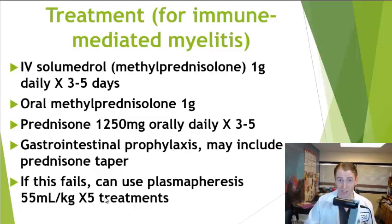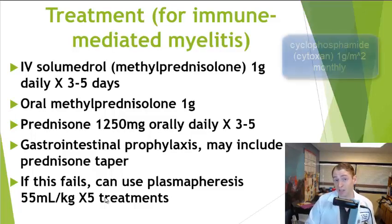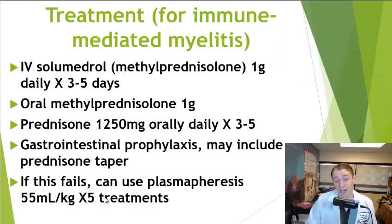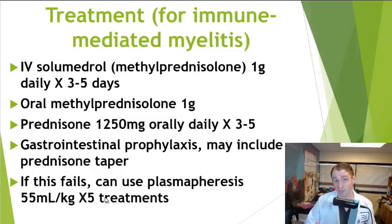For people with very severe transverse myelitis where these treatments aren't working, we'll use stronger chemotherapy drugs. One regimen I've had some success with is cyclophosphamide (Cytoxan), 1 gram per meter squared monthly for 6 months. For instance, I have a patient with neuromyelitis optica with very severe cervical spine myelitis who was quadriplegic and dependent on a ventilator, but eventually recovered and was able to walk, though with some residual neurological problems. There is hope even for very severe cases.